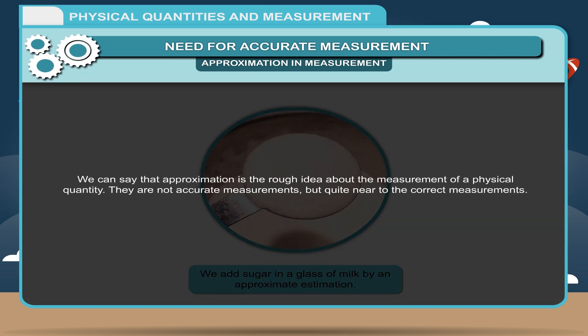Hence, we can say that approximation is the rough idea about the measurement of a physical quantity. They are not accurate measurements, but quite near to the correct measurements.